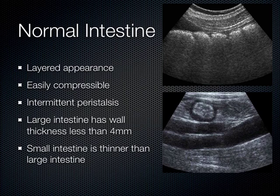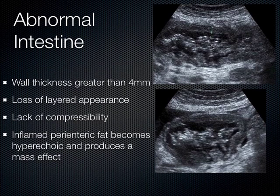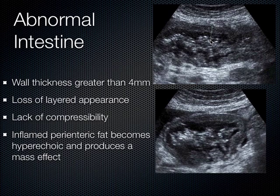The large intestine has wall thickness up to 4 millimeters. Small intestine is less than that — somewhere between 3 and 4 millimeters. If you ever have wall thickness greater than 4 millimeters, no matter what you're looking at, that's an abnormal disease state of that particular bowel, whether it's colitis or something else. You just measure the wall from the outer wall down to where the air starts.